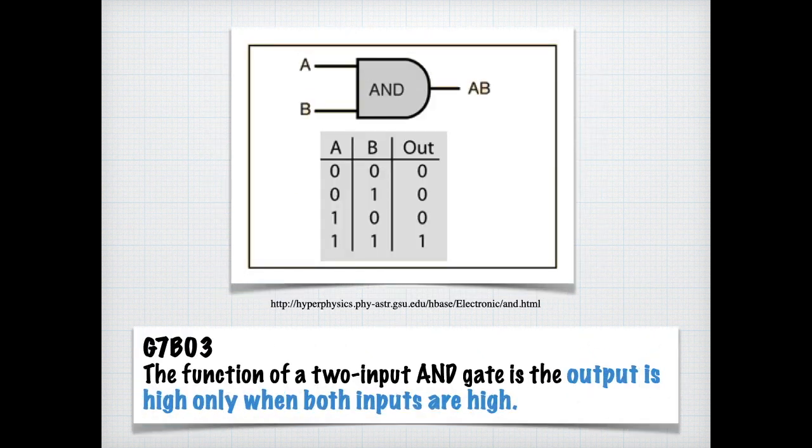And now we get into logic circuits. So what we show here is an AND gate, which means that it takes A AND B being true for AB or the output to be true. So for the exam, you need to know that the function of a two input AND is the output is high only when both inputs are high.